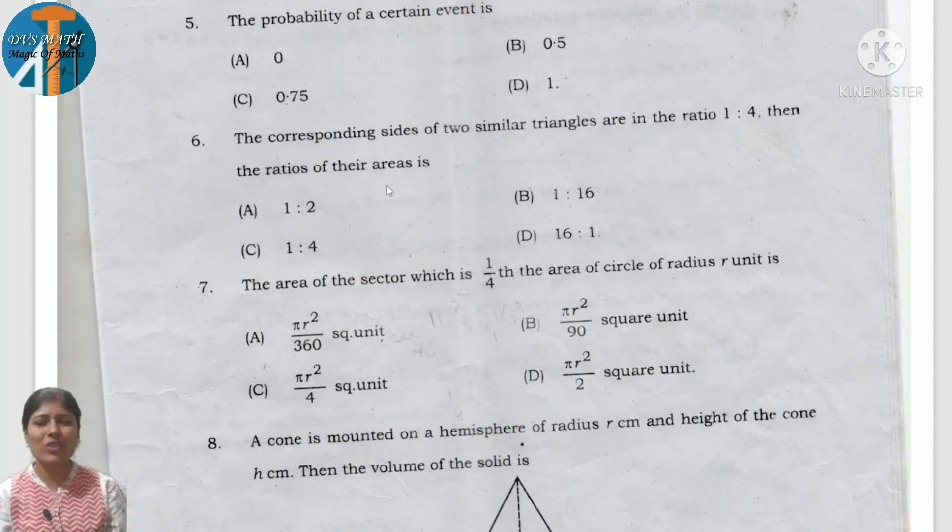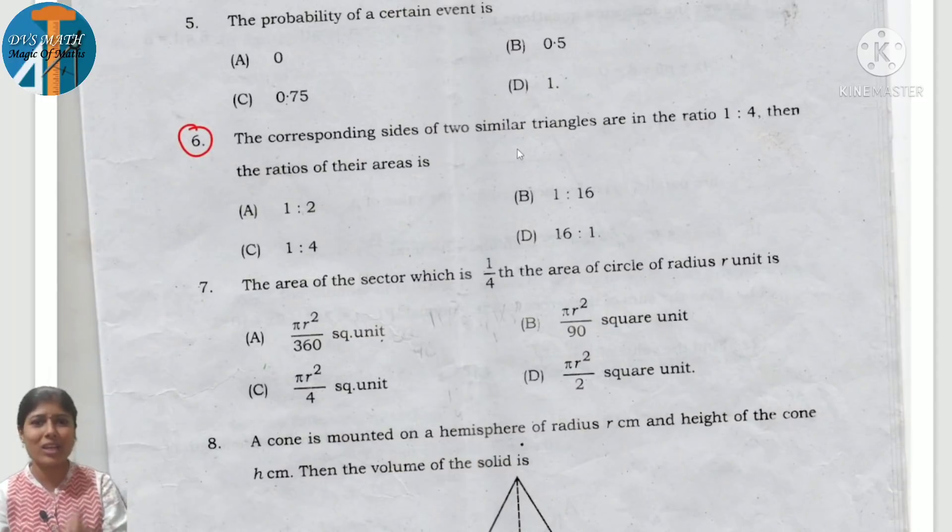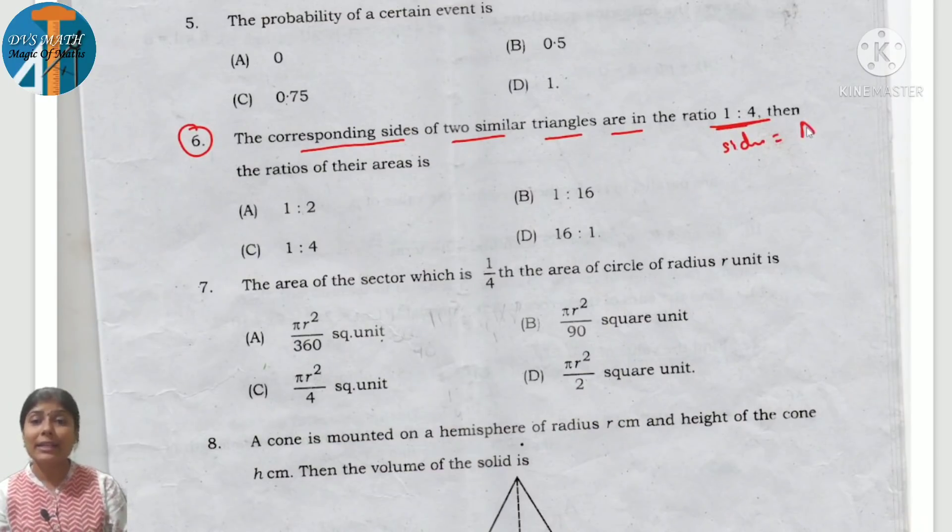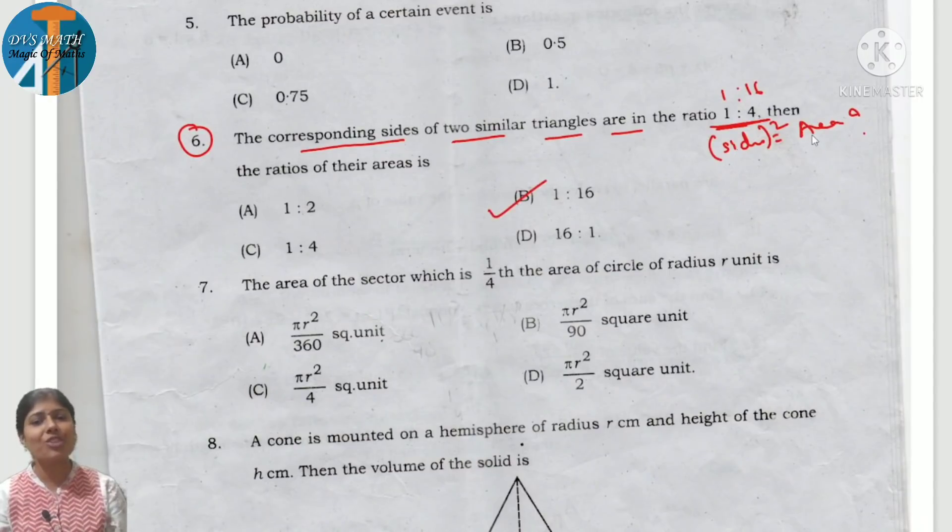Sixth question is important in triangles. The corresponding sides of two similar triangles are in the ratio 1 is to 4. They are asking for the area. When sides are given, to find area you have to square the sides. 1 square is 1, 4 square is 16, so 1 is to 16, which is option B.